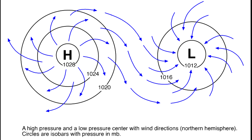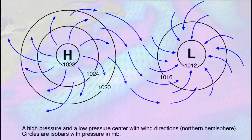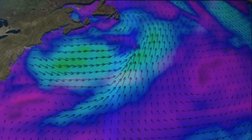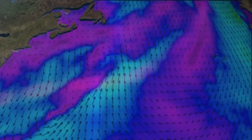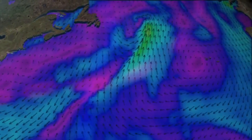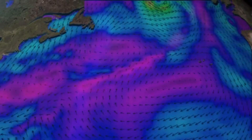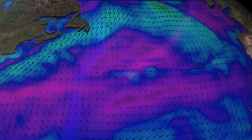Thanks to the fact that air is not spread equally across the Earth, we have low and high pressure areas on the globe. Air wants to move out of high pressure areas into low pressure areas, and when it does so we experience what we call wind.